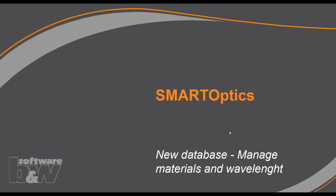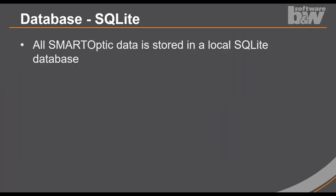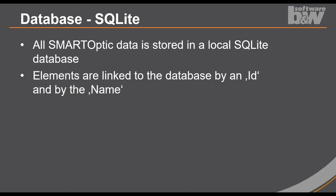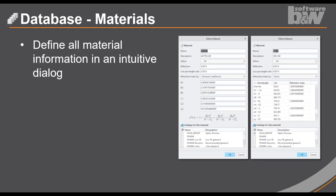Let's come to the last group in the Ribbon. It's a database group. This database is new since Smart Optics version 7. It's a SQLite database. And the database itself is stored in the local... It is stored on your local machine, though no server required. The elements from the database are linked with the ID and the name to the models in Creo. And we have four different database elements. We have the materials, which are listed in catalogs. We have the wavelengths, and we have some colors.